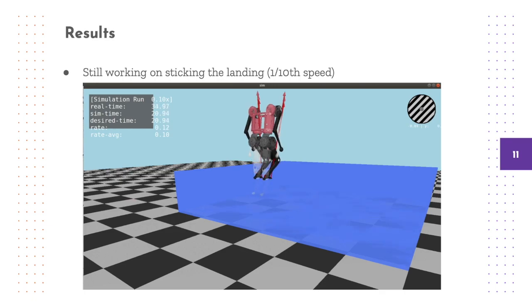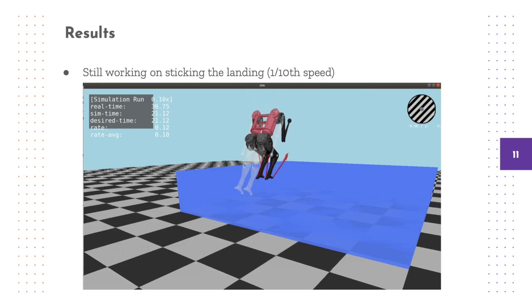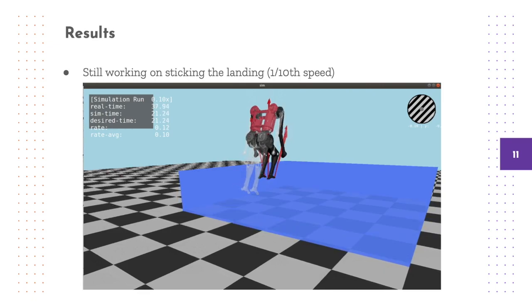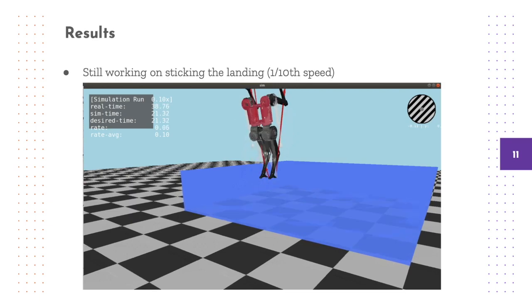With some tuning, our naive landing controller is able to counteract the downward trajectory, but it has some noticeable issues. Firstly, the robot lands much more heavily on the left side due to an initial counterclockwise rotation on takeoff.